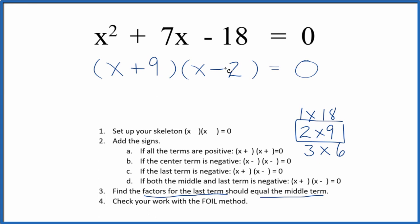So we've factored the equation x squared plus 7x minus 18. We should check our work, though, with the FOIL method.